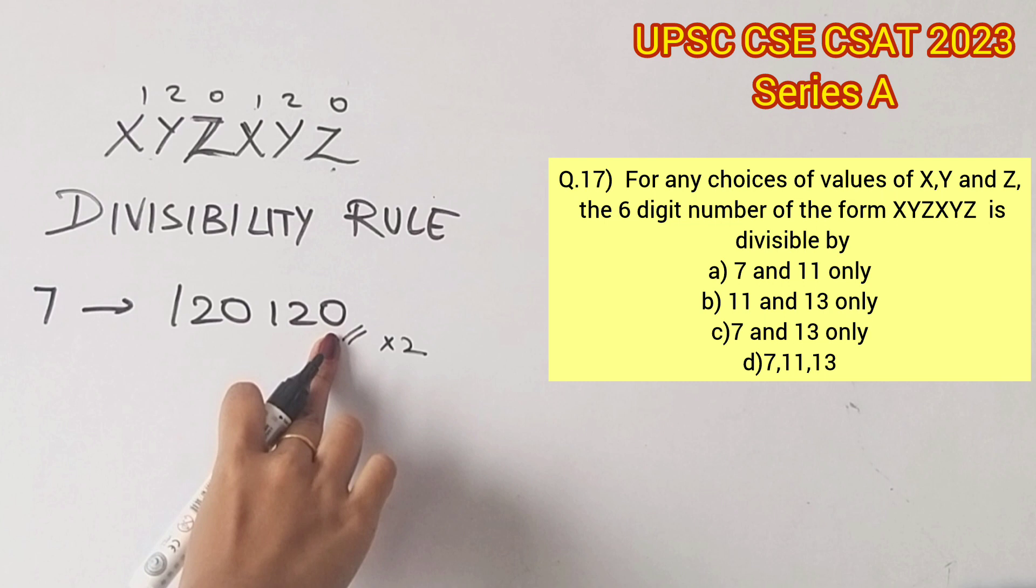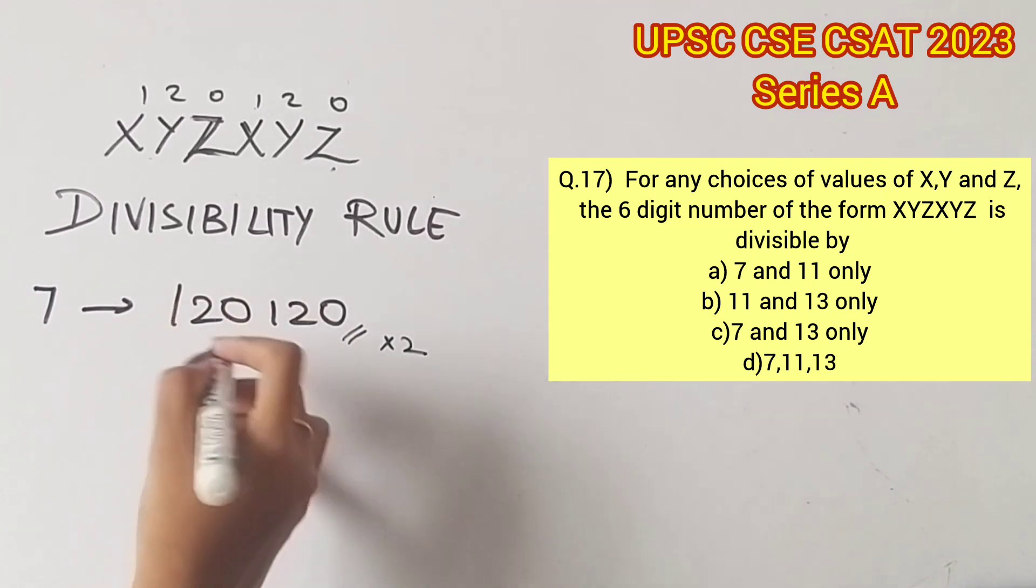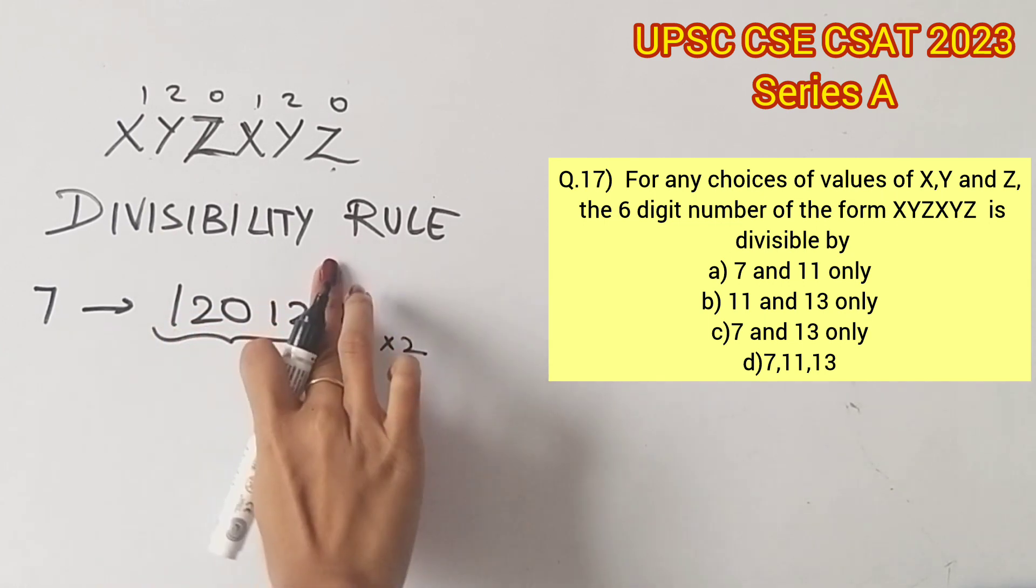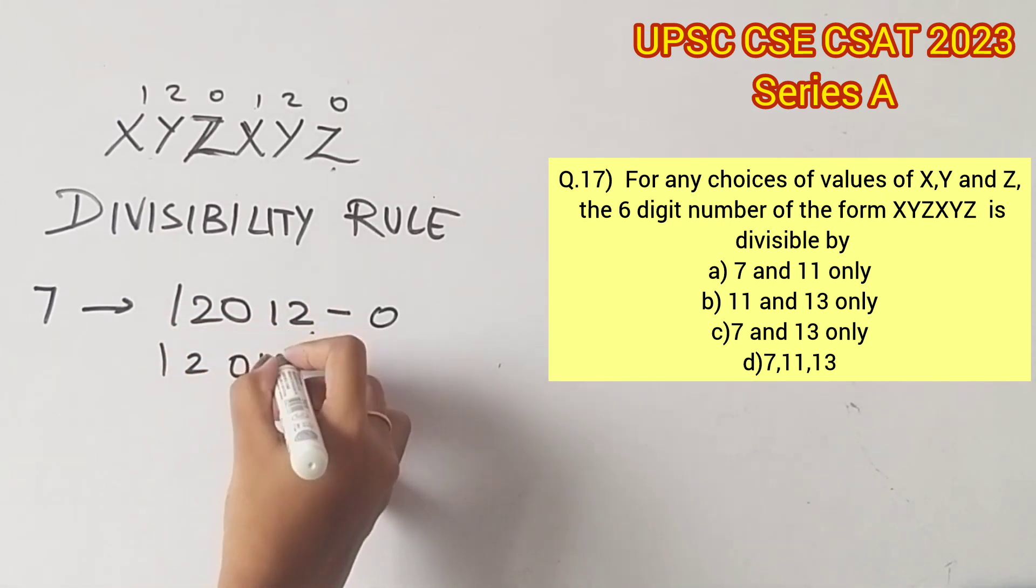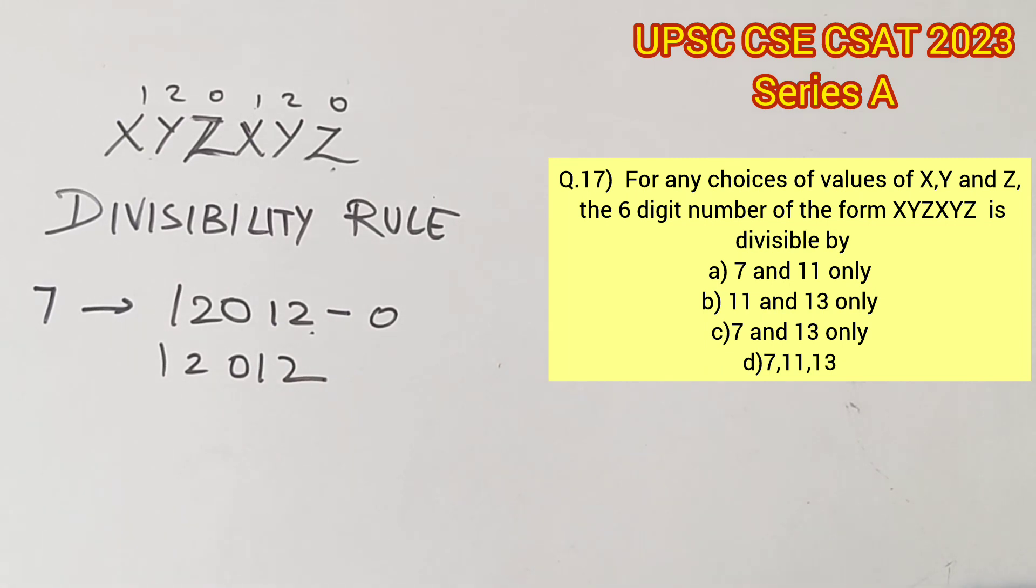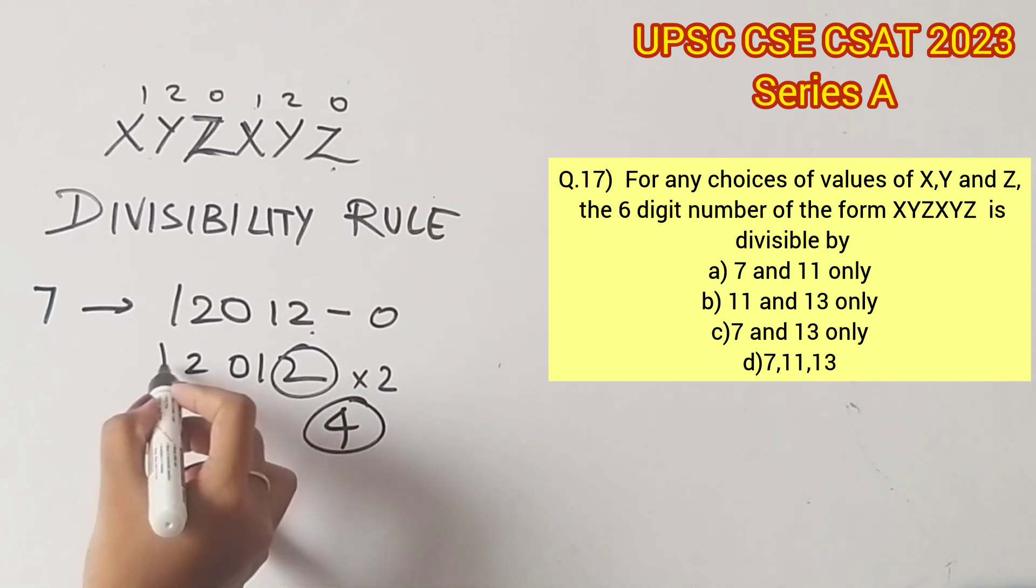If that smaller number is divisible by 7, we can conclude that the whole number is divisible by 7. So the first step is to multiply the last digit 0 with 2 and subtract it from the rest of the digits, that is 12012. So subtracting that, we get 12012. Again we should repeat this process. So the last digit 2 is multiplied with 2, which gives us 4. Subtracting 4 from the remaining digits 1201, so 1201 minus 4, we get 1197.